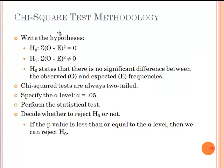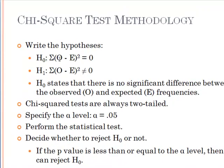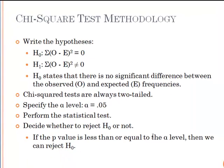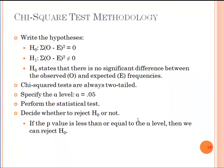So this is how the chi-square test looks like. The null hypothesis is that the sum of all differences between observed and expected values is zero, and the alternative hypothesis is that it is not equal to zero. If you paraphrase it, H0 states there is no significant difference between the observed and expected frequencies. It's always a two-tailed test and the alpha is 0.05. You perform the test and decide whether to reject the null hypothesis. If the p-value is less than or equal to 0.05, we reject H0, which states that observed and expected values are the same.